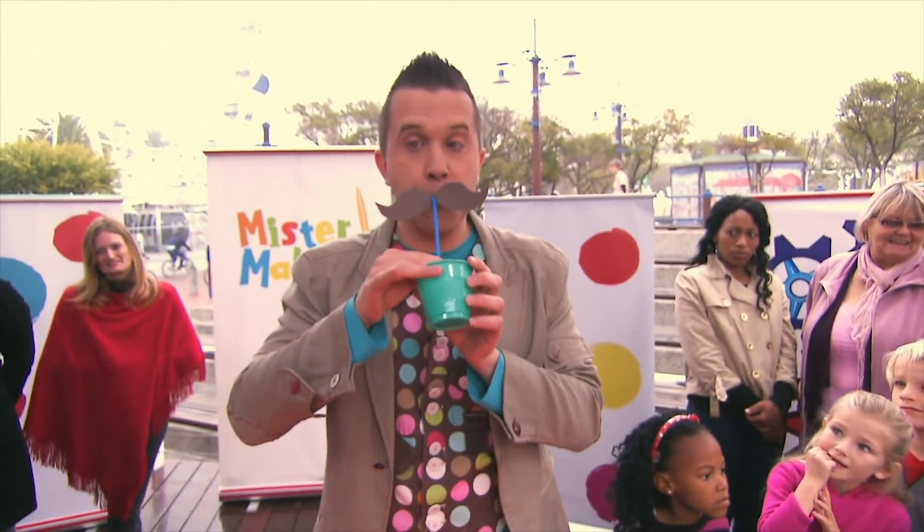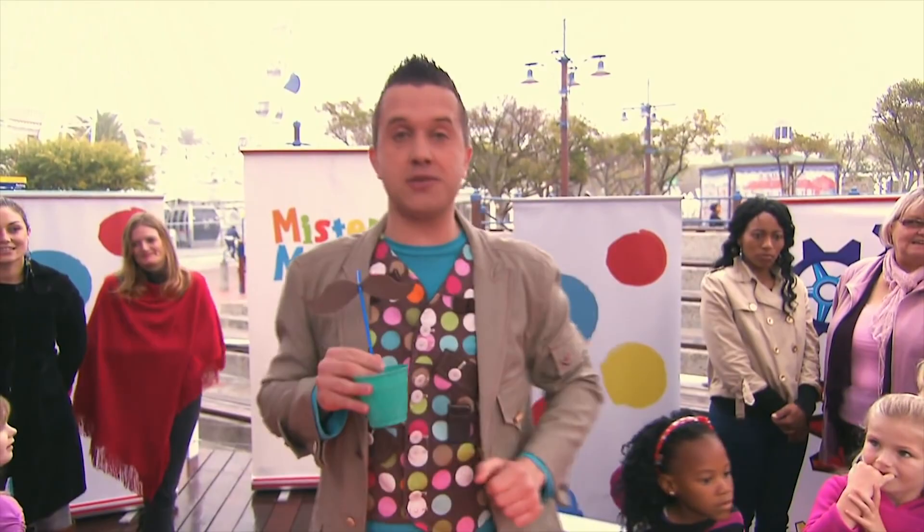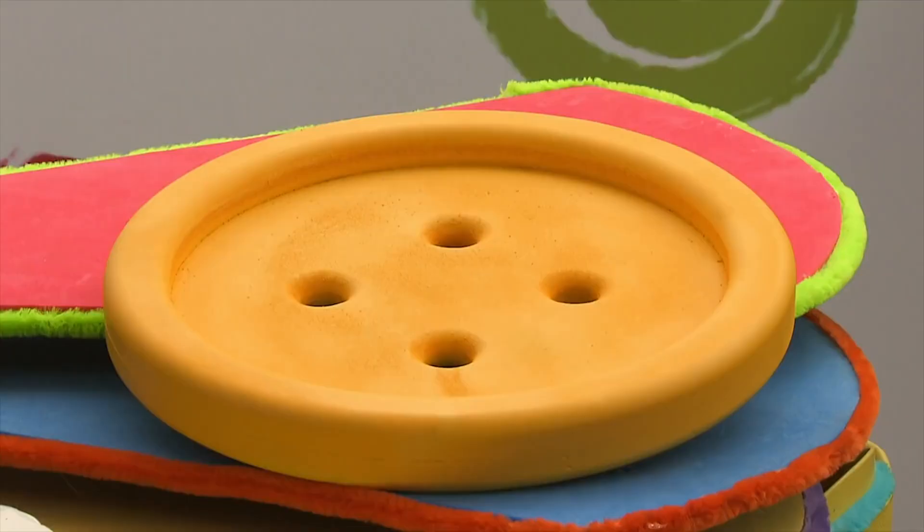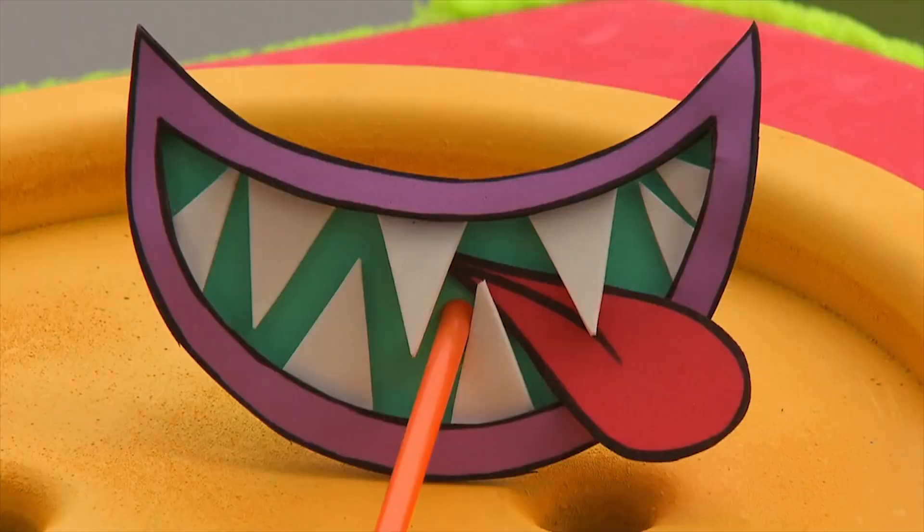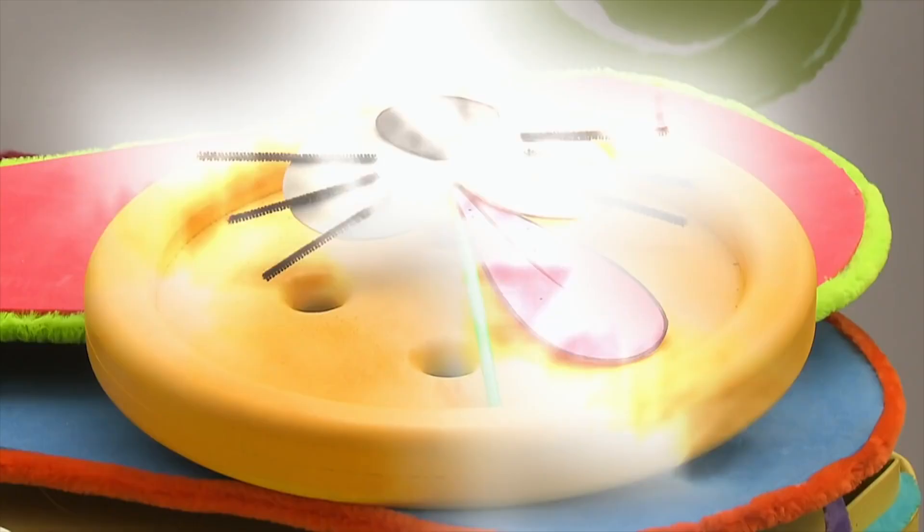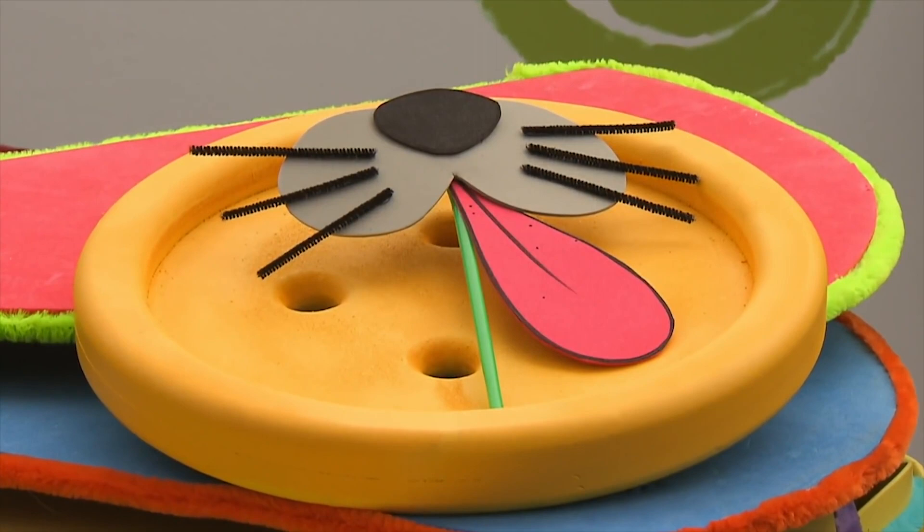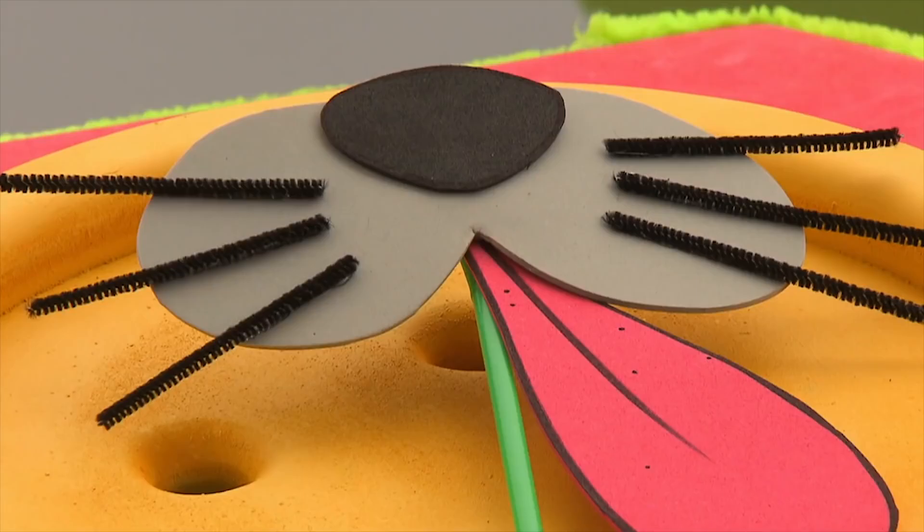But if you've got more than a minute, you could try all sorts of ideas. How about this silly mouth with purple lips and triangle teeth? Or you could have a go at making a crazy creature straw with pipe cleaner whiskers and a bright red tongue.